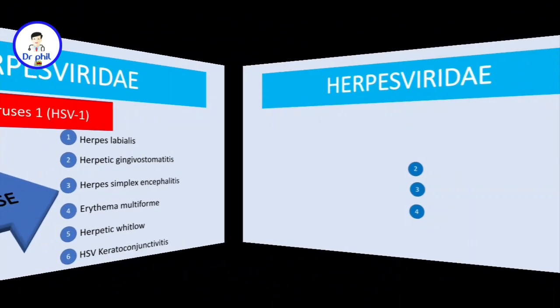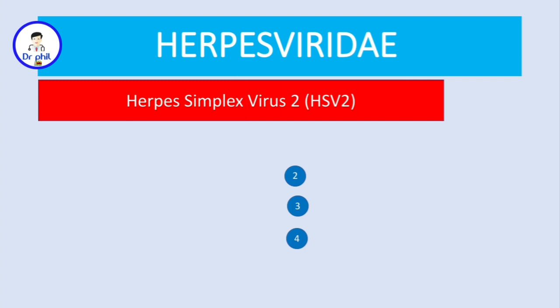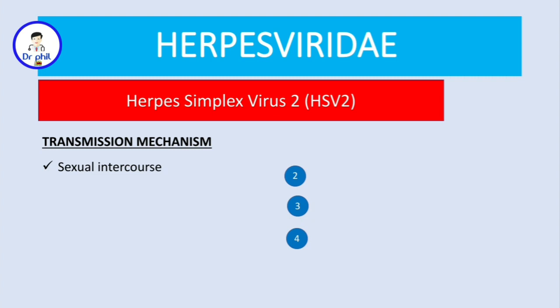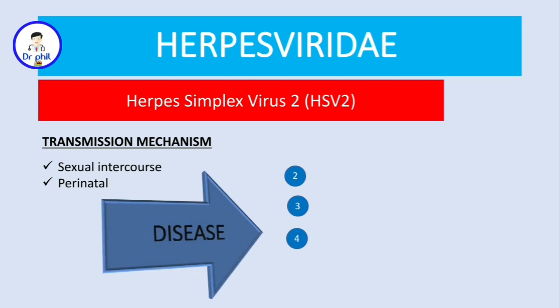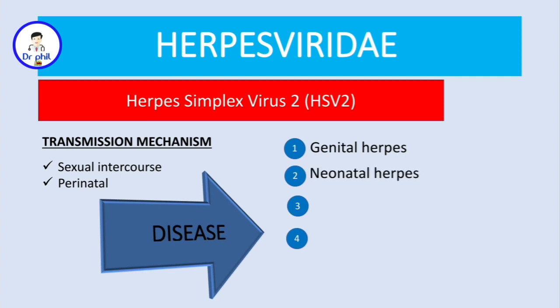Now let's talk about herpes simplex 2 virus. On transmission mechanism, the main one is sexual intercourse, and also perinatal, because this virus is also considered among the TORCH infections. The conditions you need to remember here — we have four: genital herpes, neonatal herpes, and herpetic whitlow.